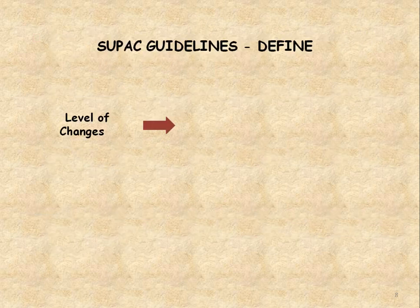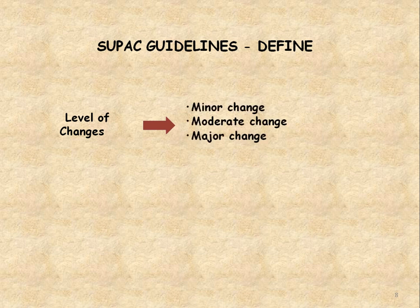This guideline defines the level of change. The levels are: minor change, moderate change, and major change. Depending upon how much change you want to make in your process or manufacturing of your dosage form, you have to categorize it into minor, moderate, or major change. By going through each level of change in detail, you will get an idea of which change should be considered minor, moderate, or major.